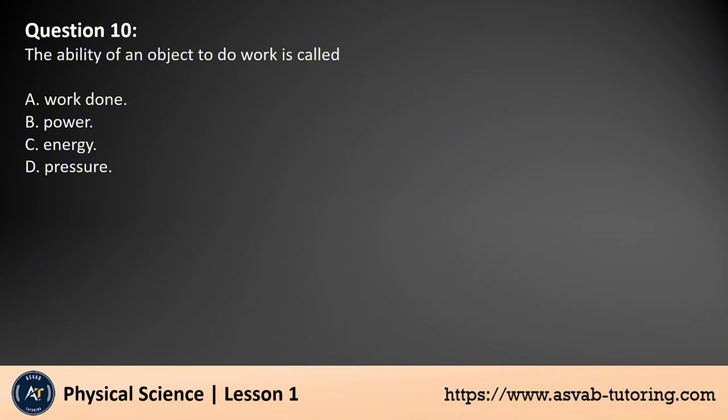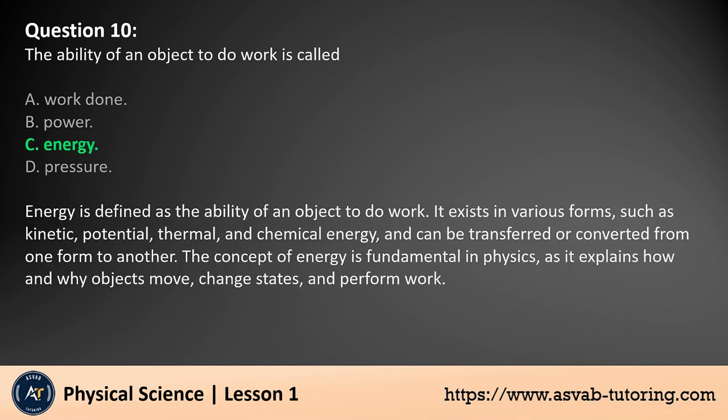Question 10: The ability of an object to do work is called A. Work done, B. Power, C. Energy, D. Pressure. The answer is C. Energy is defined as the ability of an object to do work. It exists in various forms, such as kinetic, potential, thermal, and chemical energy, and can be transferred or converted from one form to another. The concept of energy is fundamental in physics, as it explains how and why objects move, change states, and perform work.